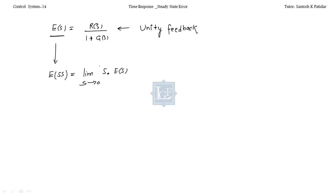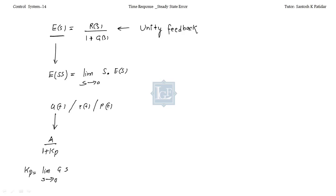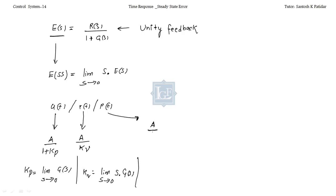We have seen ready-made formulas for three input signals: unit step, ramp, and parabola. For unit step, steady state error is 1 divided by (1 plus Kp), where Kp equals limit S→0 of G(s). For ramp, it is A divided by Kv, where Kv equals limit S→0 of S·G(s). For parabola, it is A divided by Ka, where Ka equals limit S→0 of S²·G(s).